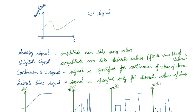Most movies we watch on television, mobile phones, or in theaters are two-dimensional. Some movies have special effects — for example, Avatar is a three-dimensional movie, which has depth, represented by x, y, and z axes. Importantly, the x-axis need not always be time.